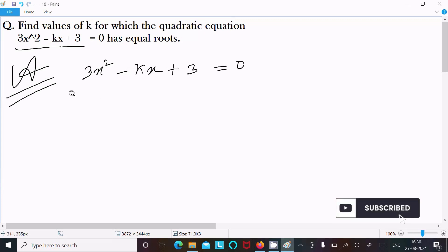After that, I'm going to compare this with the general form of quadratic equation ax^2 + bx + c = 0. So here, a value is 3, b value is -k, and c value is 3.